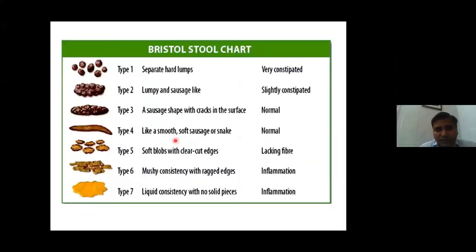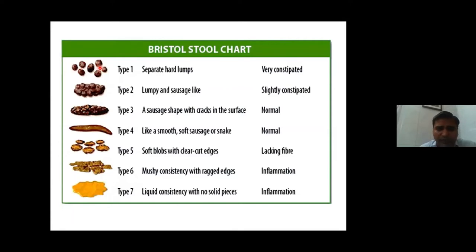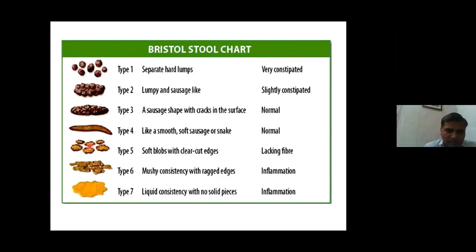The Bristol Stool Chart can be given to patients to help identify the shape and consistency of stool, serving as a surrogate marker of colonic transit time. Hard lumps or lumpy sausage-like stool indicates constipation. Sausage-shaped with cracks, smooth soft sausage, or snake-like stool is considered normal. Soft blobs with clear-cut edges indicate lack of fiber in the diet. Types 6 and 7 indicate diarrhea.